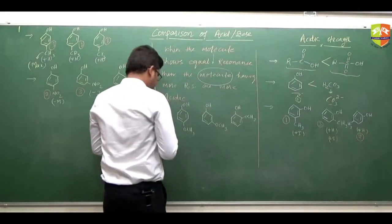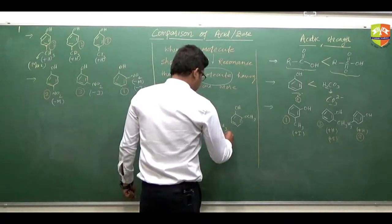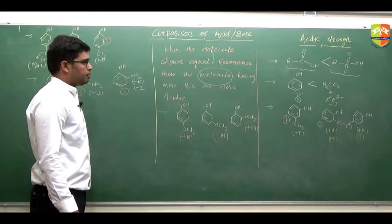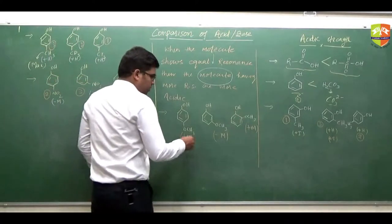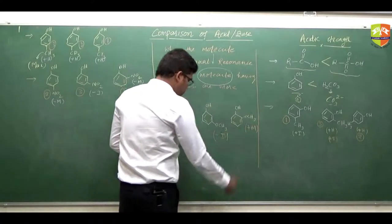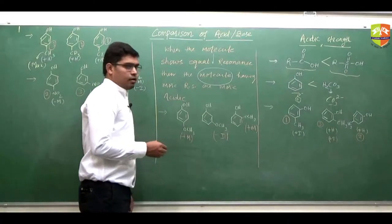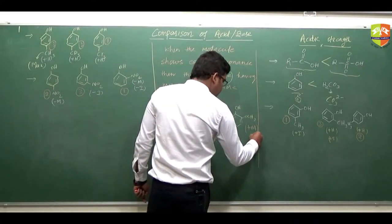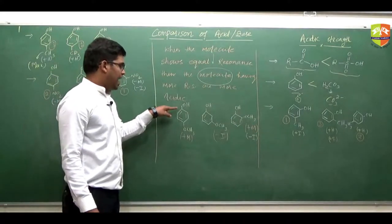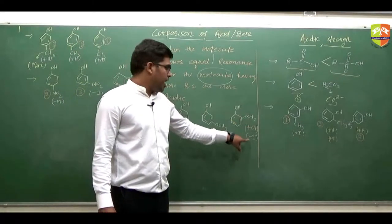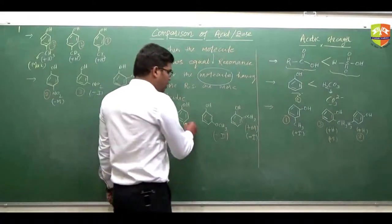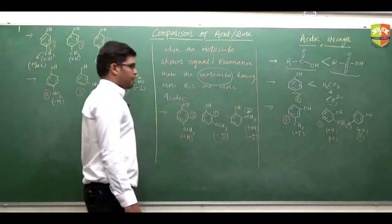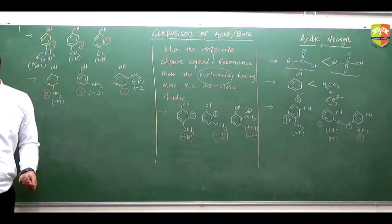Here you see OCH₃ — here it is plus M, this is minus M at meta position giving minus I, and this is plus M. Plus M decreases acidity. Apart from plus M, minus I is also possible here. Because of plus M acidity decreases, and because of minus I acidity increases. So comparing acidity: this one is maximum, then this, then this one — 1, 2, and 3.